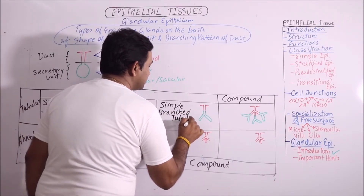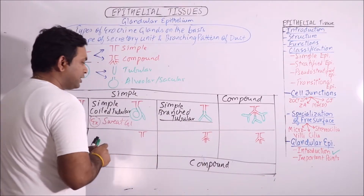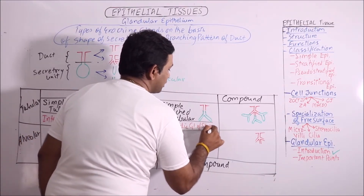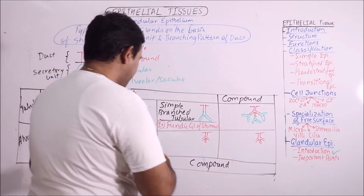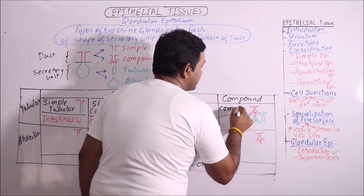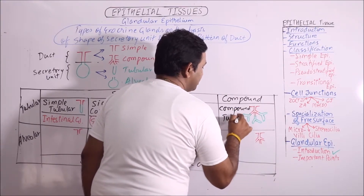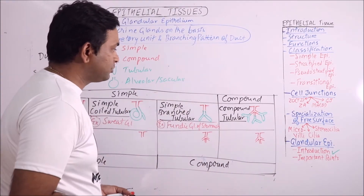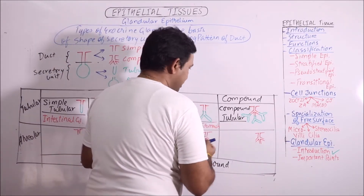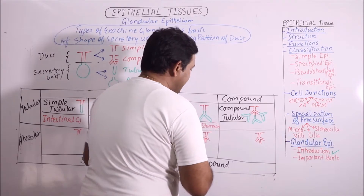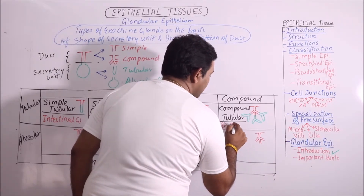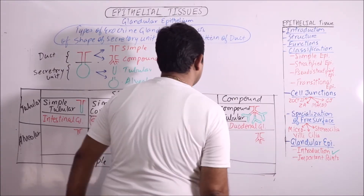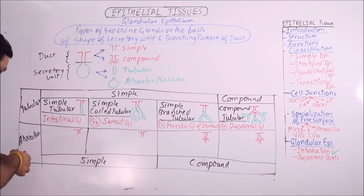Here again the duct system is simple while the secretory unit is branched tubular. The examples are fundic glands of the stomach. Then here the ducts are of compound type and the secretory unit is tubular. These are termed compound tubular — it is understood that these are always branched. The examples are duodenal glands, that is Brunner's glands.